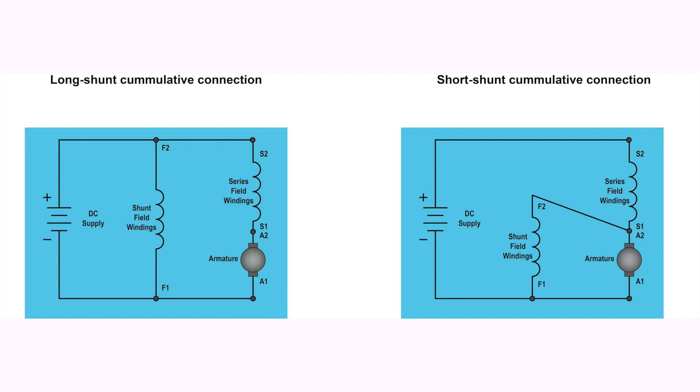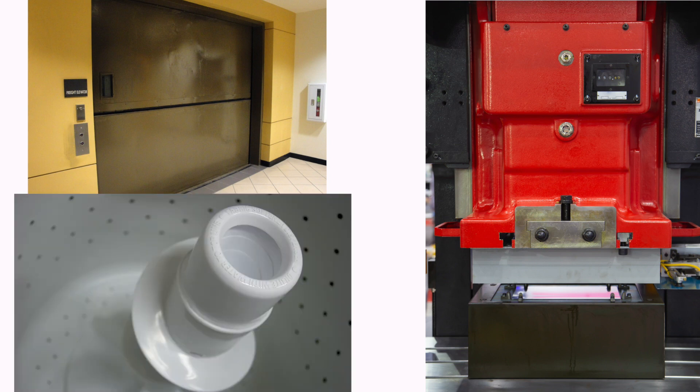For the short shunt compound DC motor, the shunt field winding is connected in parallel across only the armature winding and the Series field winding is connected to the supply current as shown. These types of motors can be found in applications such as freight elevators, stamping presses, agitator machines, and much more.